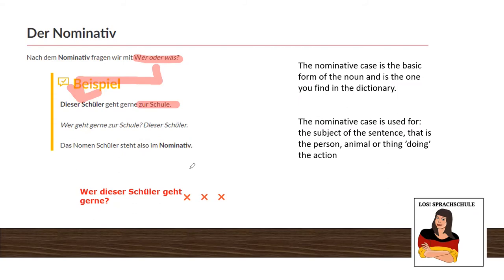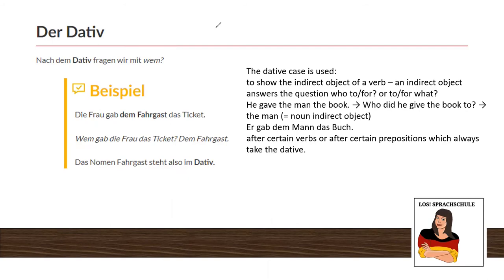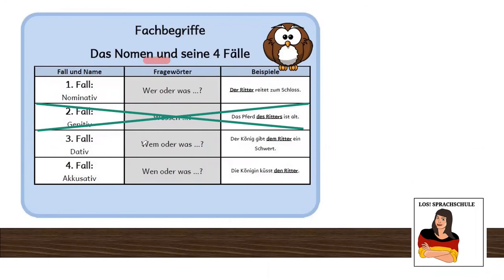Next one is der Dativ. The question word for the Dativ is 'wem' — it's like 'who for' or 'who to'. The table has 'wem oder was'. Do you remember at the beginning of the lesson I told you we have good news and bad news? The good news are that we have question words that help us find the right case, but the bad news is: if the thing is not a person, the question word 'what' is the same everywhere. You only see the difference in the question word for a person: wer, wem, wen. It's super obvious when you talk about a person, but when you talk about a thing, the question word unfortunately is the same. At least we have those question words for persons that help us in the beginning.